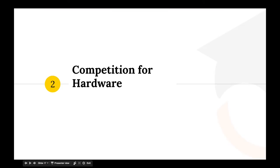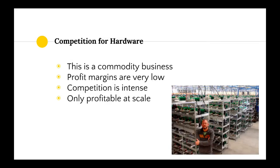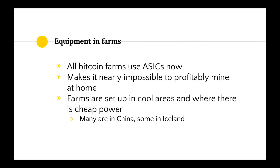Since Bitcoin mining is a commodity business, profit margins are very low and competition is intense. Like many other commodity businesses, mining Bitcoin is only profitable at a large scale. Bitcoin farms use ASICs — specific chips networked together with access to cheap power. This makes it nearly impossible to profitably mine at home. The more hashing power there is on the network, the harder it is for any individual miner to find a block and get the mining reward.